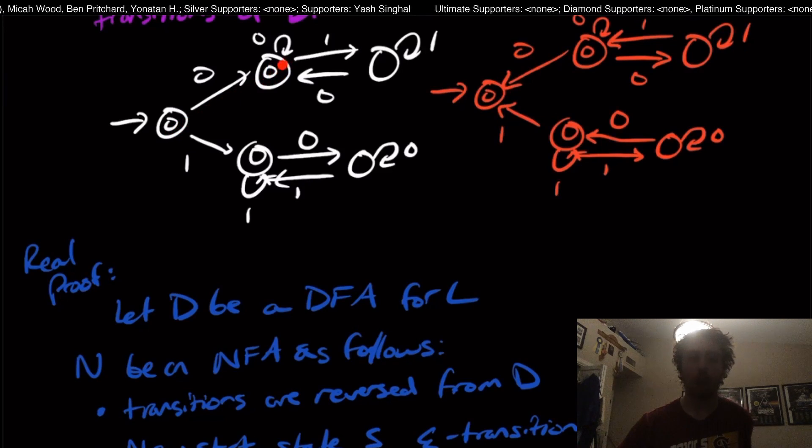Well, if you just flip all of the transitions around, if the transition was going this way, now we have it going the other way, then we're just going to be following the transitions in the backwards order. And so if we've looked at the states in the reverse order, then we're going to recognize that string.